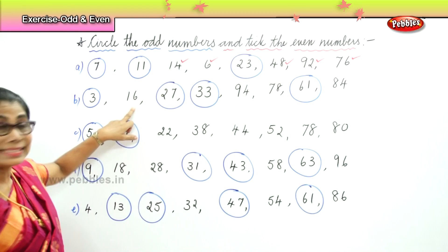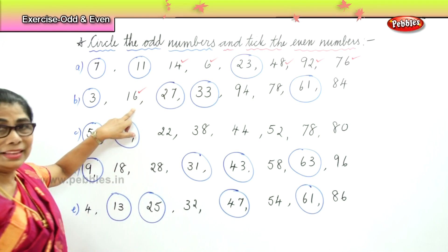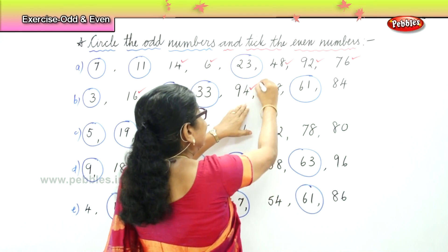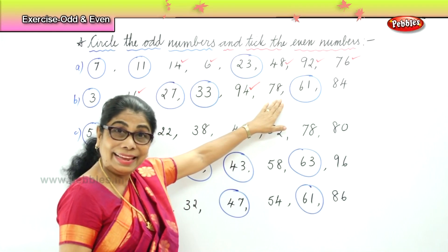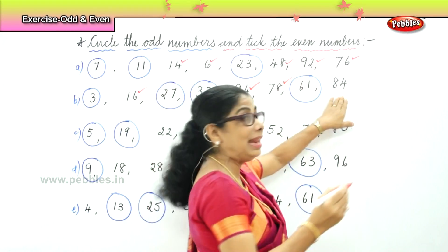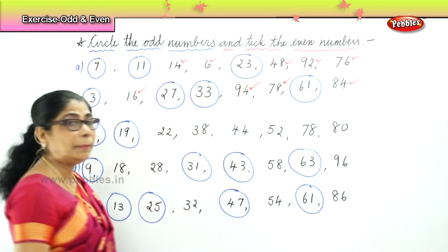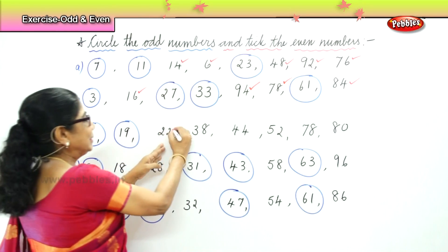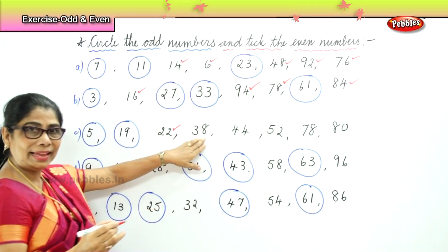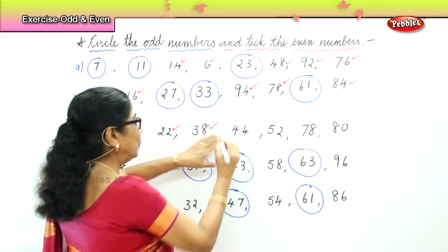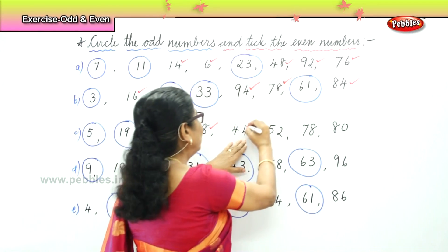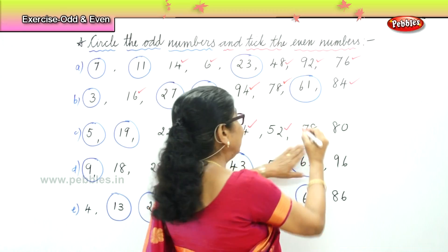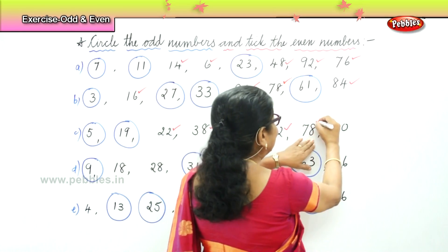Now let's look at sixteen — sixteen is an even number. Ninety-four ends in four — again it is an even number. Seventy-eight ends in eight — it is an even number. And eighty-four ends in four — they can all be paired up without anyone being left out. Twenty-two ends in two — it's an even number. Thirty-eight ends in eight — it's an even number. Forty-four ends in four — it's also an even number. Fifty-two ends in two — it is also an even number. And seventy-eight ends in eight — even number.